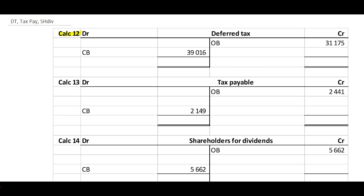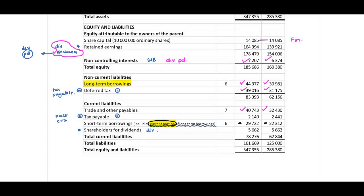I've already transferred this: for deferred tax, reference 3,139 (calculation number 12), as well as my tax payable (calc 13) — 2,441 and 2,149. For shareholders for dividends: 5,662 and 5,662 — no movement. I've also transferred my short-term borrowings. Let's take these off the statement of financial position to confirm the transfers: 244, 214, and shareholders for dividends 566 and 566.